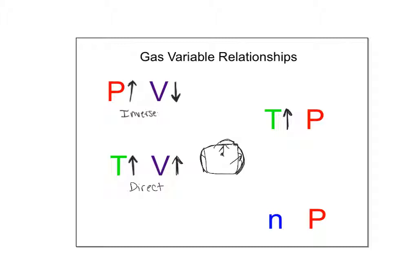Temperature and pressure also have a direct relationship — if volume is held constant, like in a rigid flask, faster-moving particles collide more often, increasing pressure. Lastly, moles (N) and pressure are directly related: more gas particles means more collisions. Going from 100 kids to 1000 kids at prom means a lot more bumping — that's more pressure.